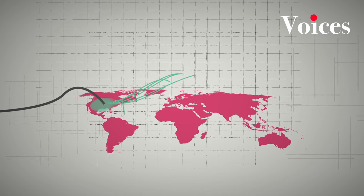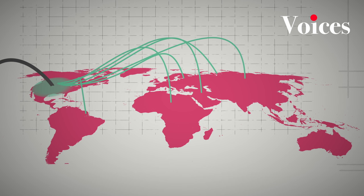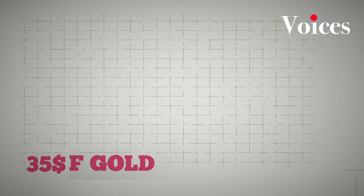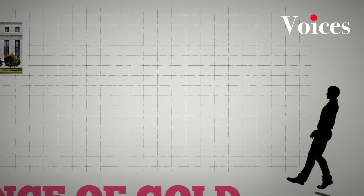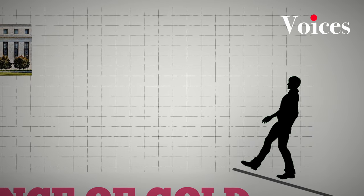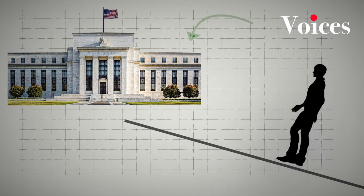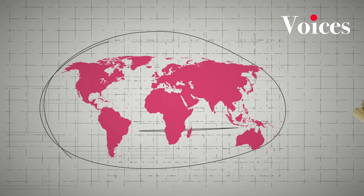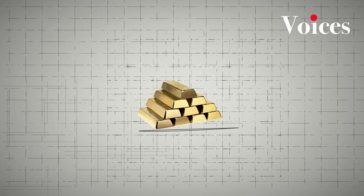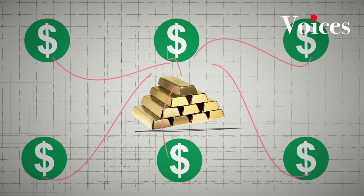The Bretton Woods Agreement of 1944, in short and simplified terms, stipulates that whoever delivers 35 U.S. dollars, America will receive an ounce of gold. That is, if an individual goes to the U.S. central bank, he can exchange $35 for an ounce of gold, and the United States, represented by the central bank, guarantees this. At that time, the dollar became a strong currency and gained international confidence because it was backed by gold. Countries began to accumulate large amounts of dollars in their reserves in the hope of converting their value into gold at any time.